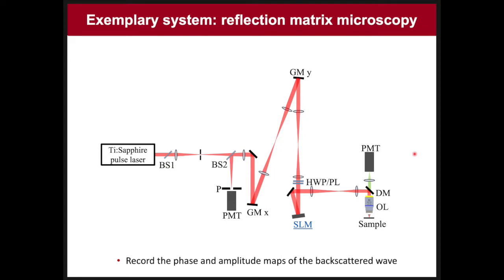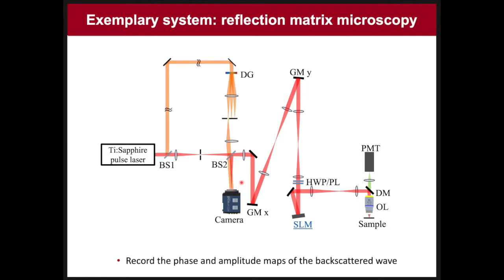This shows our exemplary system for measuring the time-gated reflection matrix. The backbone of the setup is a typical confocal or multiphoton microscope. The focused illumination is scanned at the sample plane by galvanometer scanning mirrors, and the returning wave is measured through a pinhole. In the presence of a scattering medium, there will be signal not only at confocal points but also at non-confocal points. Our setup records the phase and amplitude of all those scattered waves by removing the pinhole and PMT and placing a camera instead, with a reference wave introduced to form an interference image at the camera. Using a digital holography algorithm, we obtain the phase and amplitude of backscattered waves as a function of illumination position.